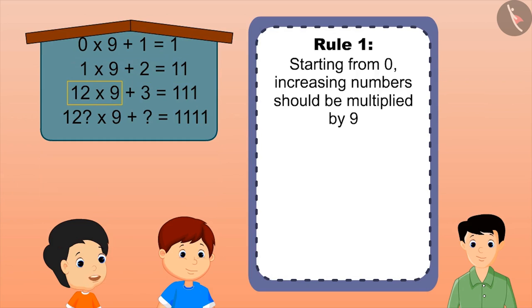So, with this rule, the next digit will be 123, which when being multiplied by 9, and on adding 4 to this, will give 1111.